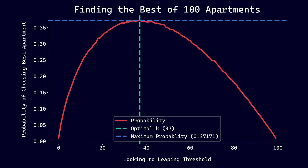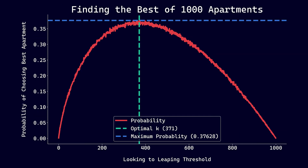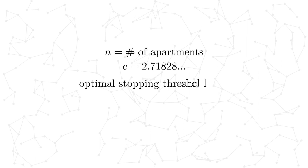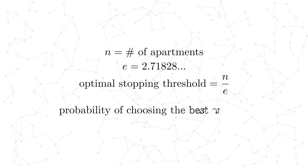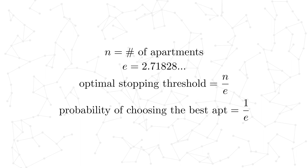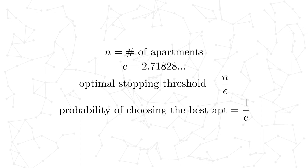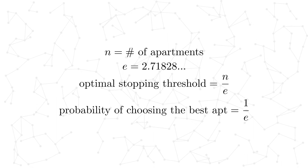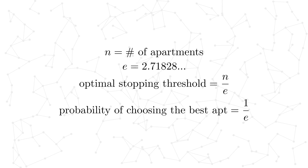As we go from 10 to 100 to 1000 apartments, we see that the optimal k seems to lie just above a third of the number of available apartments. Also, the probability that we choose the best apartment out of the entire bunch seems to be converging towards 0.37. In reality, the optimal threshold is n over e, and the probability that we choose the best apartment converges to 1 over e. E is known as Euler's number, or about 2.71828. Our simulation actually exhibits these theoretical values as we increase the size of n and the number of times we run the simulation.